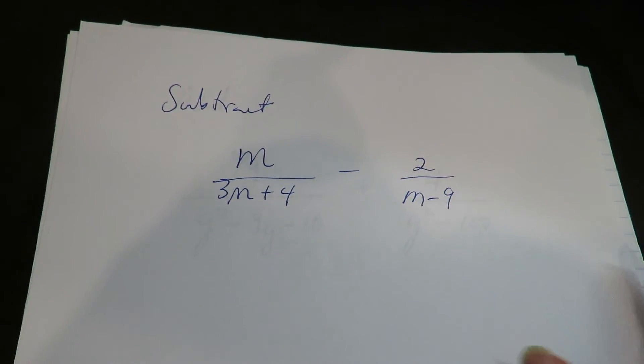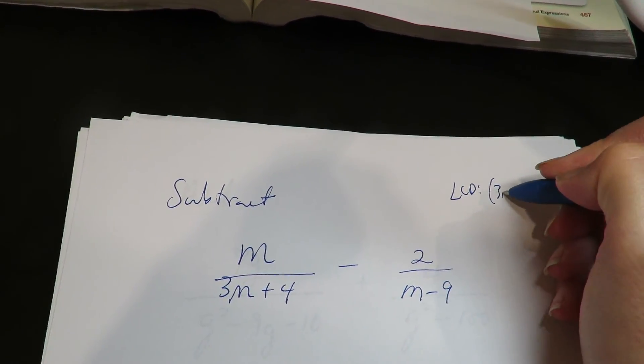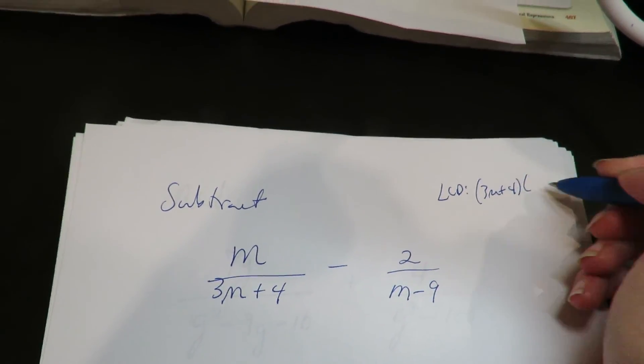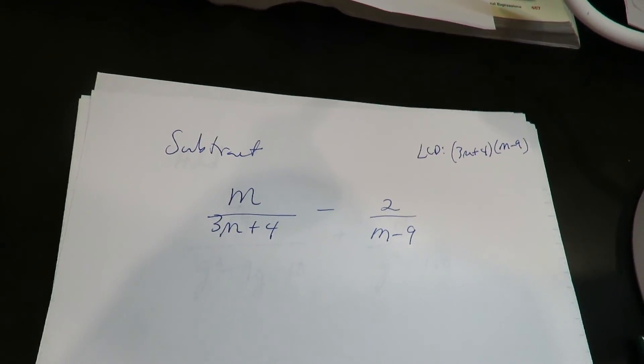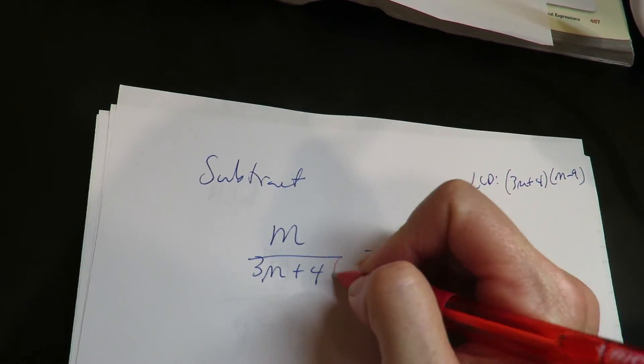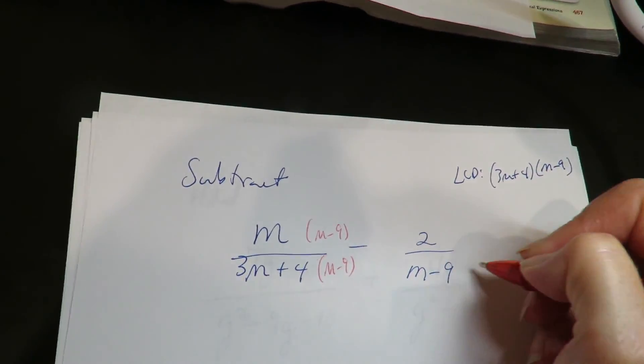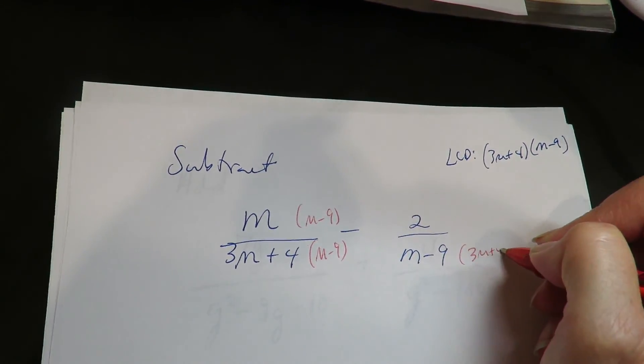Alright, let's do a subtraction one. So the LCD on this guy is 3M plus 4 and M minus 9. Alright, so just like before, we're going to build up the fractions. So this one's missing the M minus 9 to both sides, and this one's missing the 3M plus 4 to both sides.